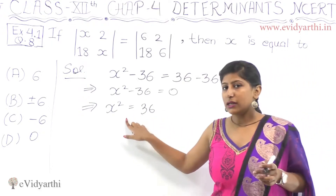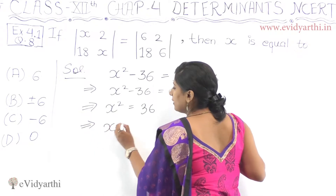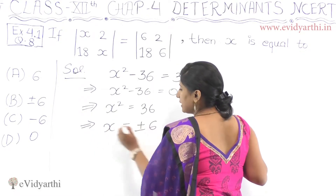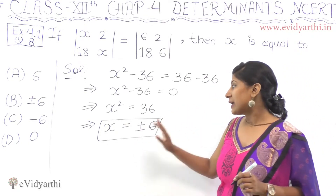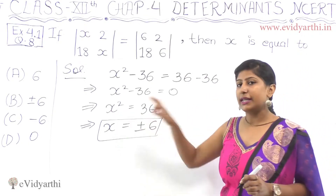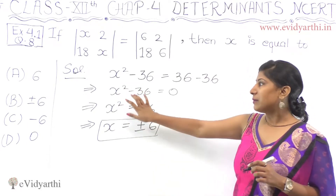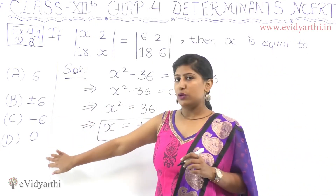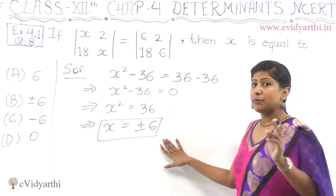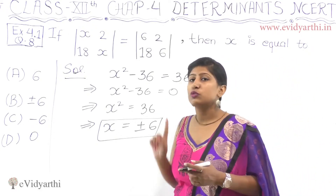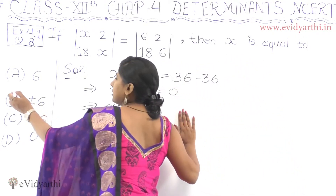This is a quadratic equation, so there are two values. x is plus or minus 6. In a quadratic equation there are always two values. When we take the square root of 36 we get plus or minus 6 — negative and positive. So the answer is x equals plus or minus 6. Option B is correct.